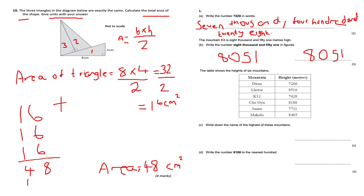The next section: a table shows the height of six mountains. Part c: write down the name of the highest mountain. Looking at the table, the highest appears to be — I think it's pronounced 'Le Hot C', a French one. Part d: write 8,188 to the nearest 100. The hundreds column holds 1; looking at the tens digit 8, which is above 5, so round up to 8,200.